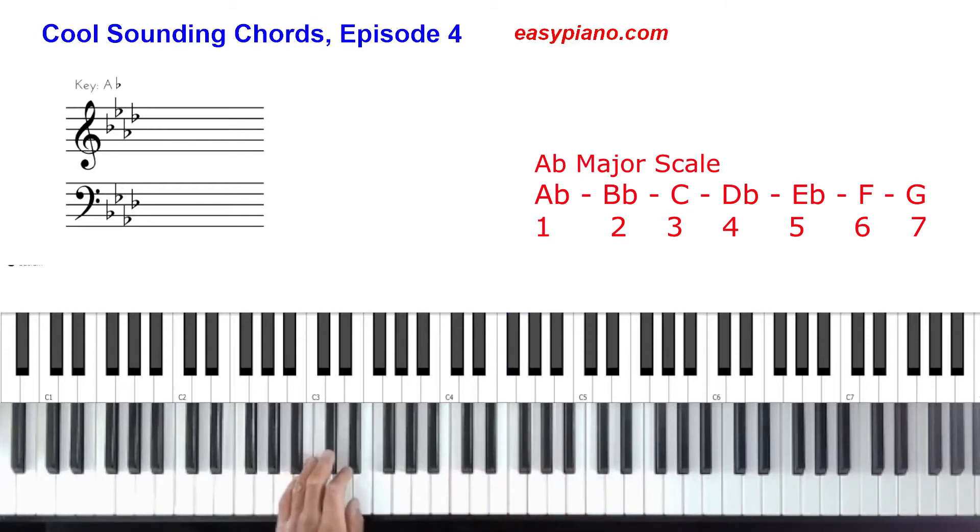What's going to happen here with this one is we're going to start with the four chord. Let me just play the bass notes on the left hand. We're going to start with four, then we're going to two, then we're going to one. We do that three times. So here's the second time: four, two, one. We got one more time: four, two, one. After that, we're going to go to the flat seven to the five to the one.